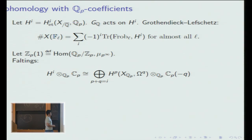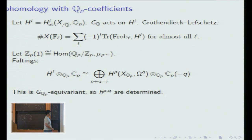Faltings proved the following p-adic Hodge decomposition: if I tensor this H^i by the completion of the algebraic closure of Q_p, then it decomposes as follows. These H^p(X, Ω^q) are the sheaf cohomology groups we saw in the last slide. C_p(-q) just means I'm twisting by Z_p(1) to the -q tensor power. On the left-hand side, the absolute Galois group of Q_p acts diagonally, and on the right-hand side it only acts on the right factor. The important thing about this decomposition is that it's equivariant with respect to this Galois action. An old theorem of Tate says that the C_p(-q)'s are distinct as Galois modules for different q, and so from this we can recover the Hodge numbers.